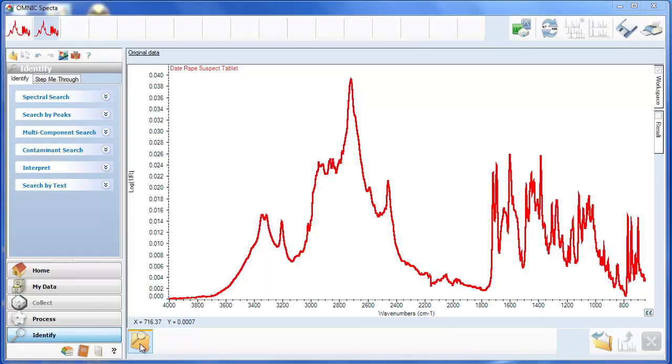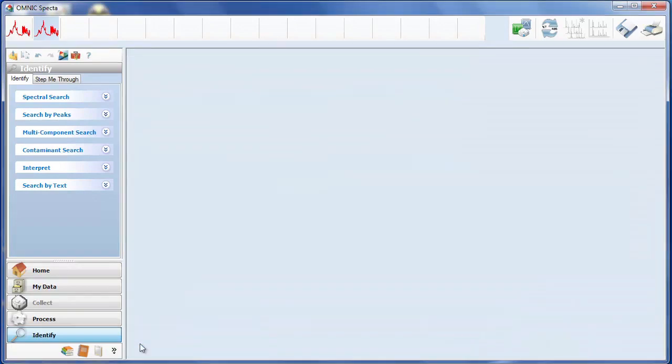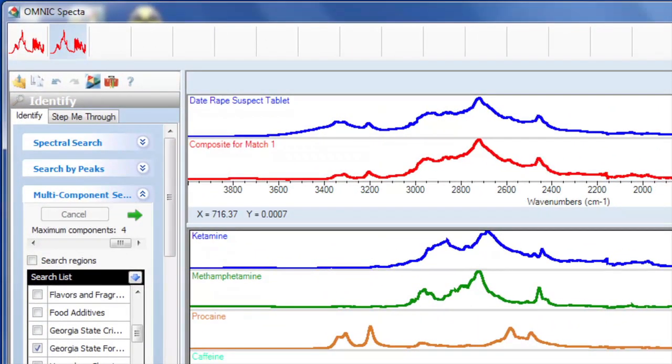Once your spectrum is collected, the exclusive OMNIC forensics package lets you identify up to four compounds in your sample, quickly and easily, without data manipulation.